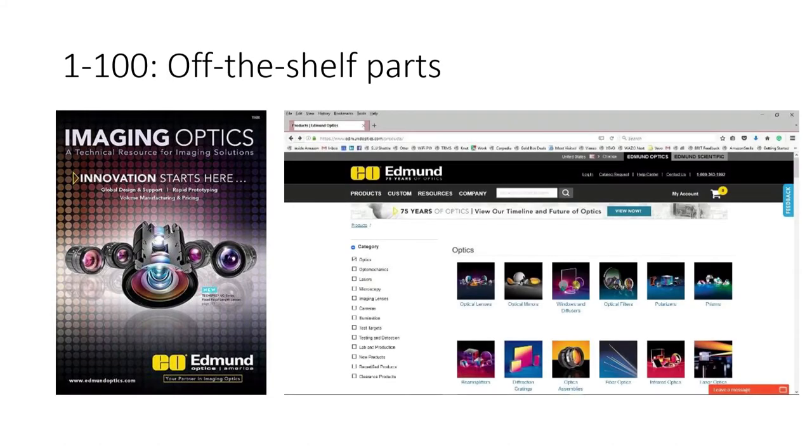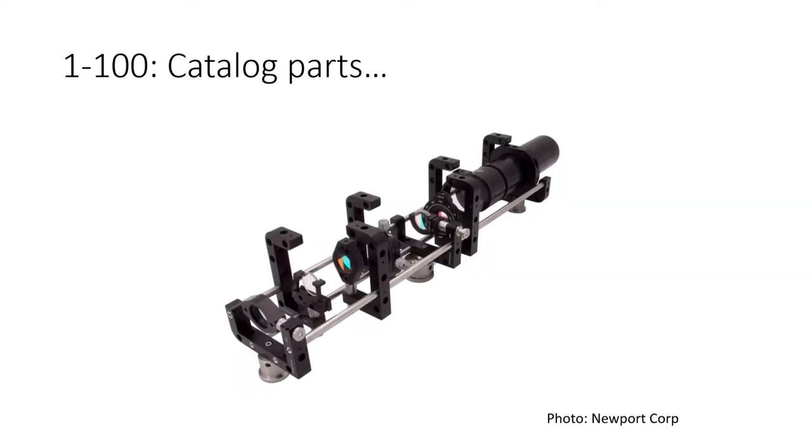If you're only making a few, a good place to start is catalogs or online catalogs. It's not 1971 anymore. You can maybe make something from these parts in the catalogs. That's easy. You skip a lot of design work and you can put something together with catalog elements, catalog mounts.